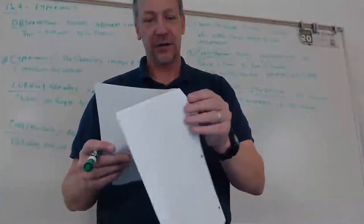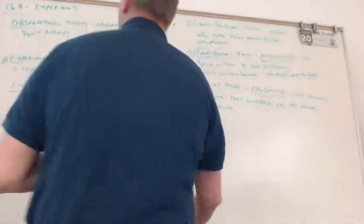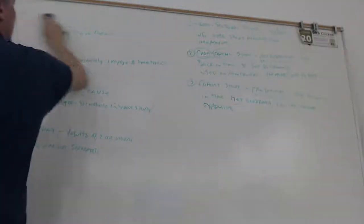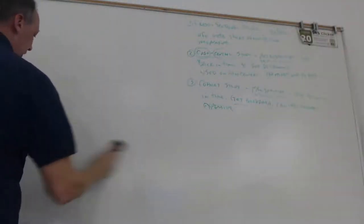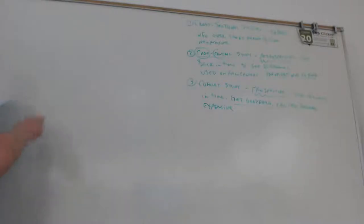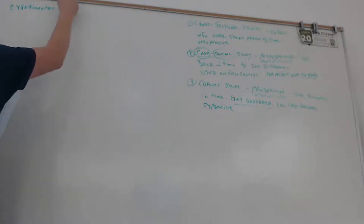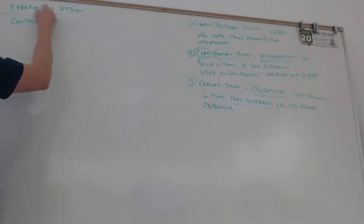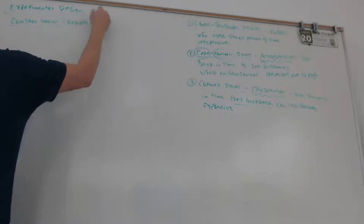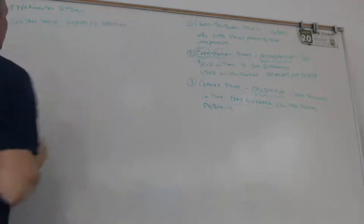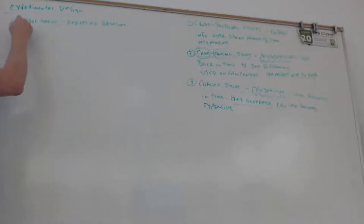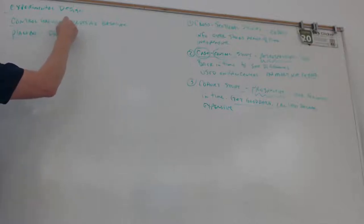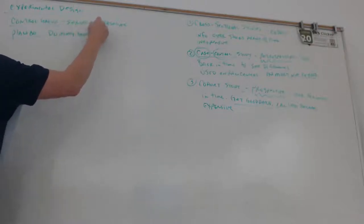Now let's talk about experiments and experimental design. In experimental design, you have a control group, which serves as a baseline. Often the control group gets what's called a placebo — a dummy treatment. This works really well with drugs because it's easy to give somebody a pill and they don't know what it is. It doesn't work so well with surgery or diets.